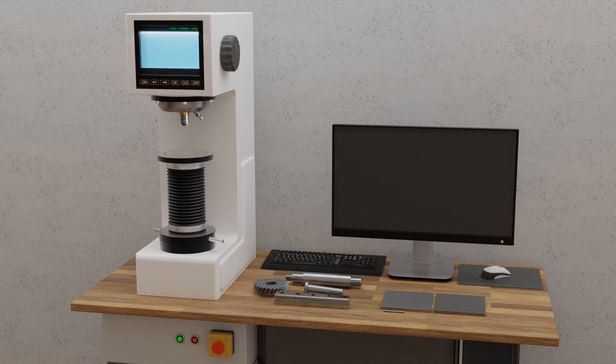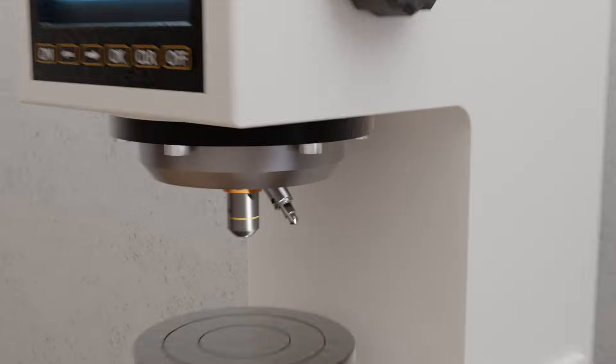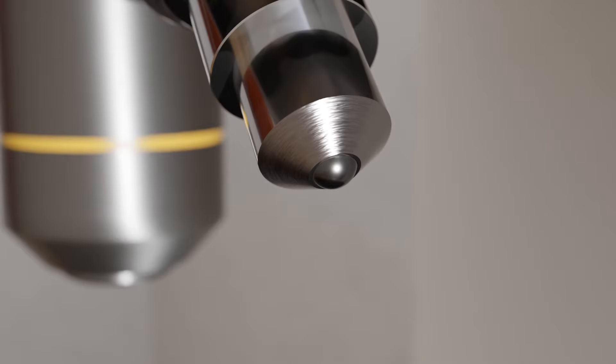In the linked video, we covered the fundamentals of hardness testing using the Brunel method as an example. This method, which uses a hard metal ball as the indenter, is particularly well suited for soft to medium hard materials with heterogeneous structures, such as cast iron. For very hard and thin workpieces, the Vickers hardness test method is suitable, which is explained in detail in the linked video.